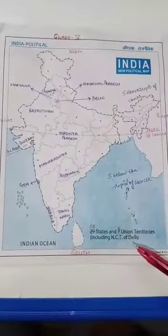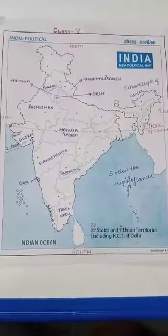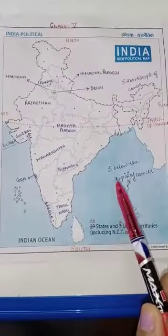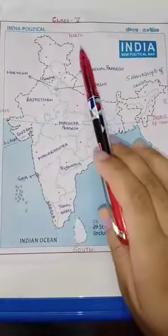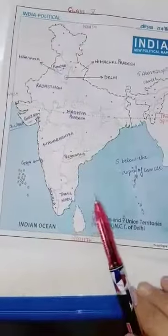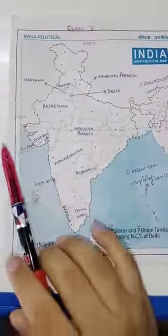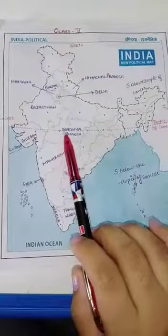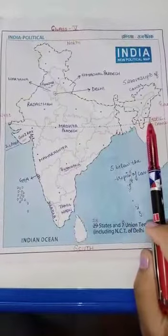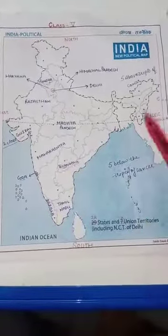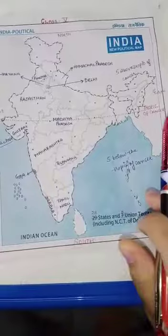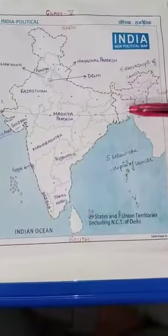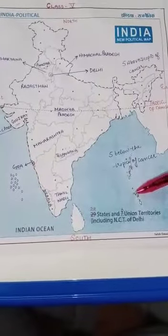I will give you some important tips of the map. The basic thing of the map is directions: north, south, east, and west. In the center line is the Tropic of Cancer. To avoid any confusion we will divide the map into two parts: first part above the Tropic of Cancer and second part below the Tropic of Cancer.